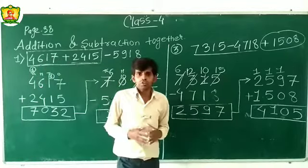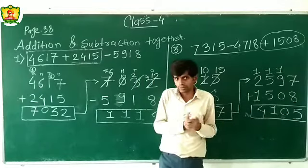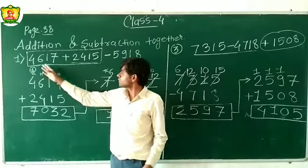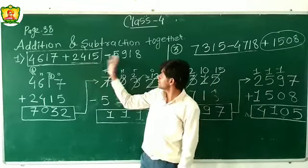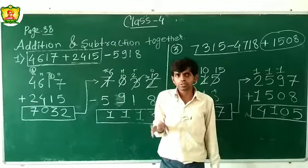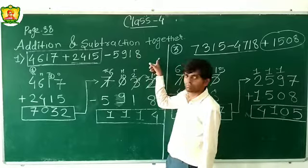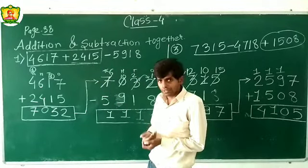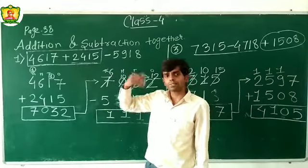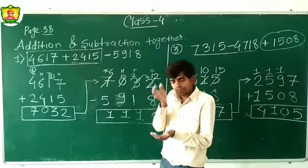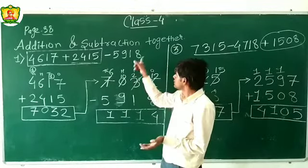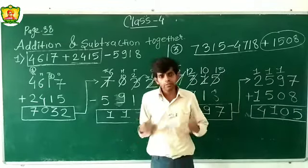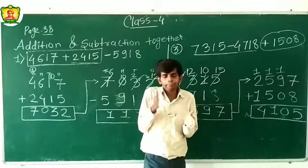Very easy! In addition and subtraction together we have to follow step by step. If there is addition, we add; if there is subtraction, we subtract. Always solve step by step. There are three numbers — follow the operation between them. Very, very simple.